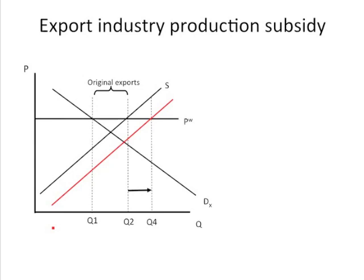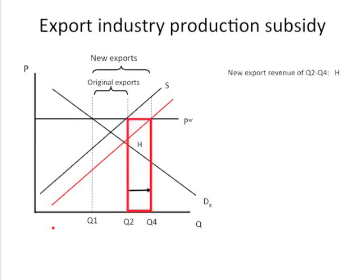So now we want to take a look at the efficiency effects here. We have new exports. Even with this same level of production increase, it's not going to be as many new exports as the export subsidy because you haven't reduced consumption, but you do have an increase in exports nonetheless. We have really the same production efficiency loss that we had before. We have the new export revenue from actual sales abroad equal to H — that's how much you earn by actually getting to the international market, quite apart from any payment from the government.